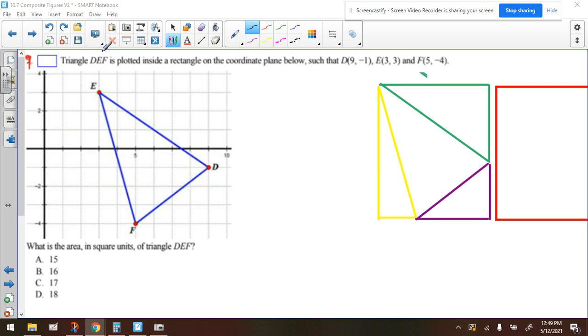It says triangle DEF is plotted inside a rectangle on a coordinate plane below, such that D is (-9, -1), E is (3, 3), and F is (5, -4).